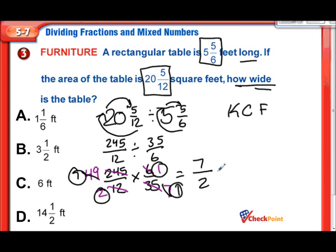But once again, that does not match any of our answers over here, so we need to turn this back into a mixed number. So we have 7 halves, that means 7 divided by 2. 2 goes into 7 three times. 3 times 2 is 6, and 7 minus 6 is 1. So that means it's 3 and 1 half. So the width of that table must be 3 and a half feet.